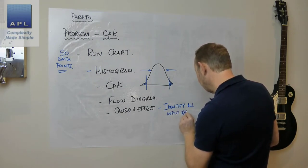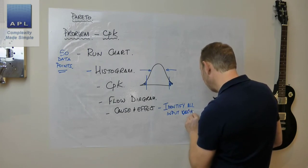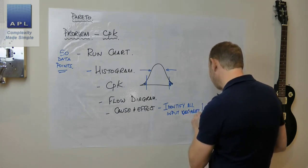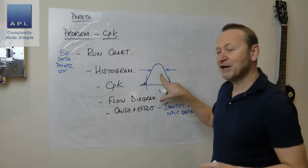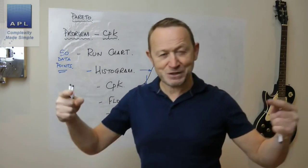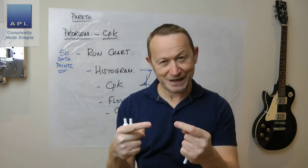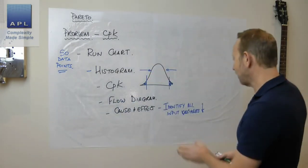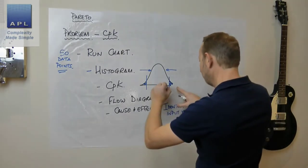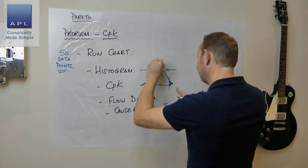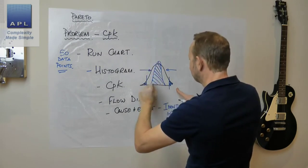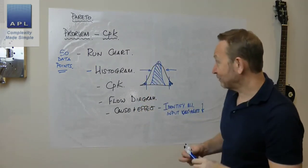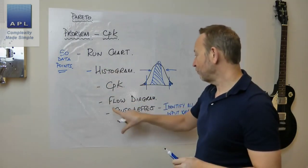I'm going to reduce the variability. I'm going to control as much of that variability as I can. As I do that, I'm going to squeeze my CPK in. Now I improve the process and get rid of my defect rate. So we've gone one, two, three, four, five.